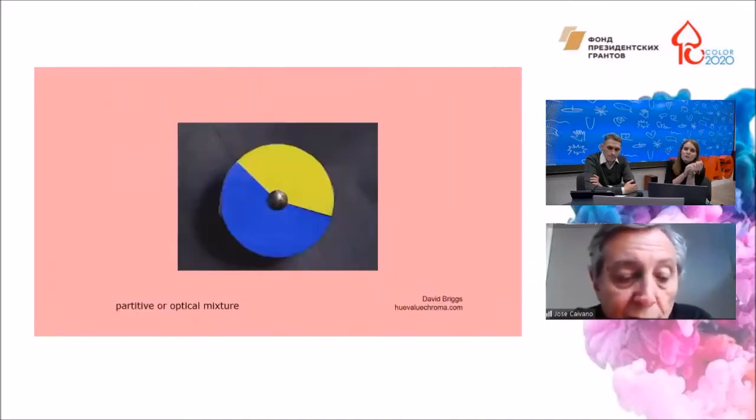This kind of color mixture can be made also with spinning disks. The blue and yellow sectors on a disk produce a grayish color when the disk is spun very fast.